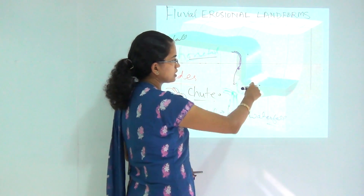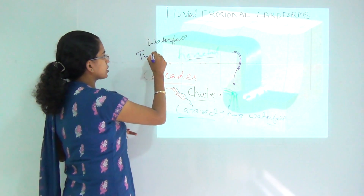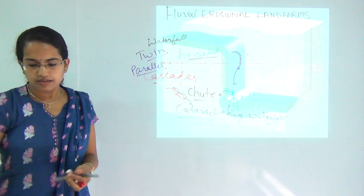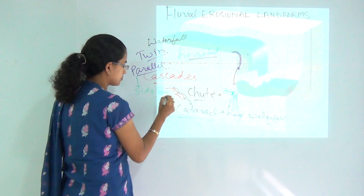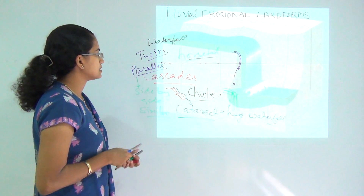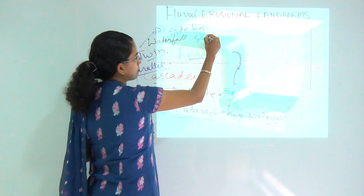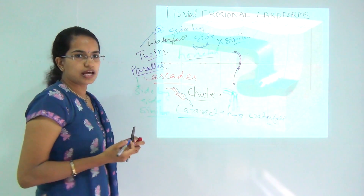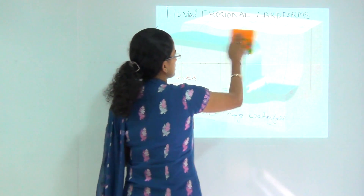Then you have the plunge waterfall, which, as you can see, directly falls into the plunge pool. We also have two common kinds of waterfalls: twin waterfalls and parallel waterfalls. In parallel waterfalls, there are two waterfalls that occur side by side and they are similar to each other. In the case of twin waterfalls, there are also two waterfalls side by side but they are not similar. So that's the major difference between twin waterfalls and parallel waterfalls.